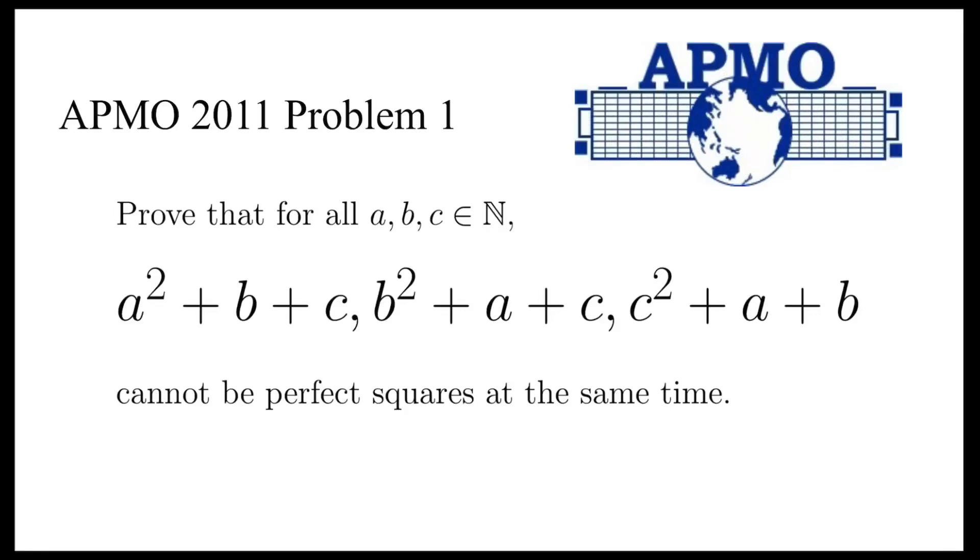In this video, we are going to prove that for any natural number a, b, and c, the three numbers a squared plus b plus c, b squared plus a plus c, and c squared plus a plus b cannot be perfect squares at the same time.